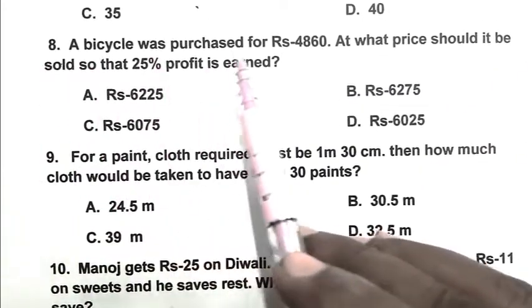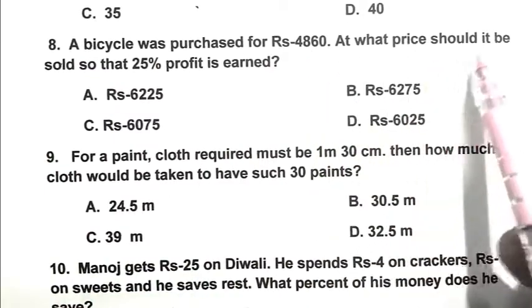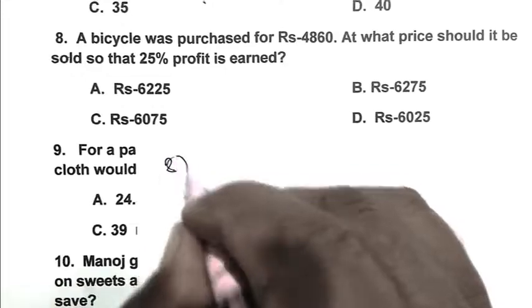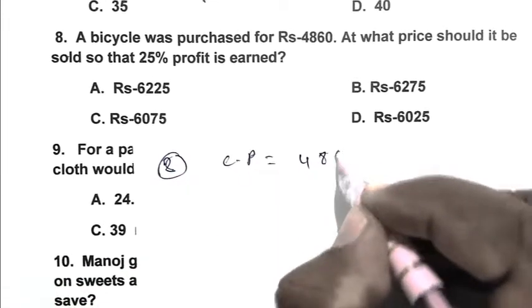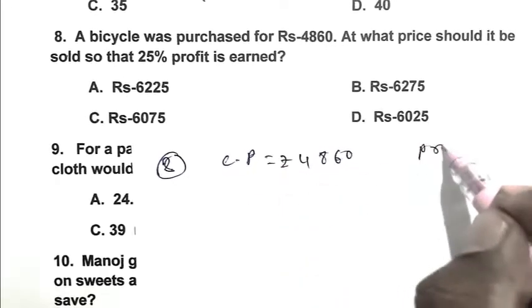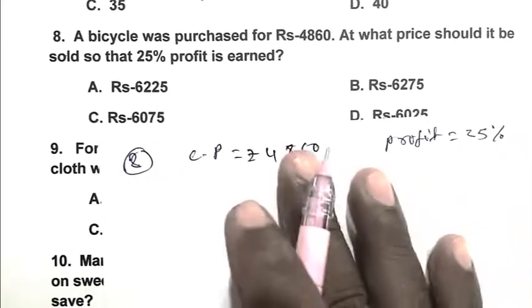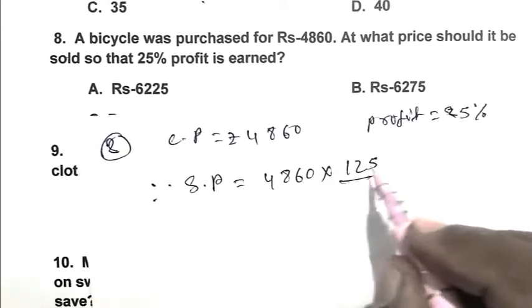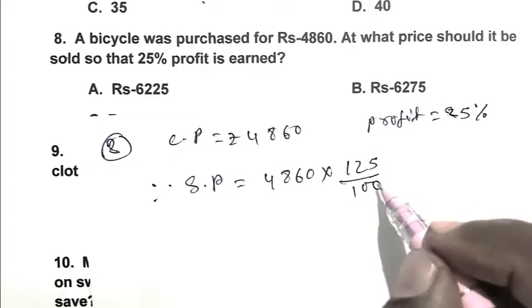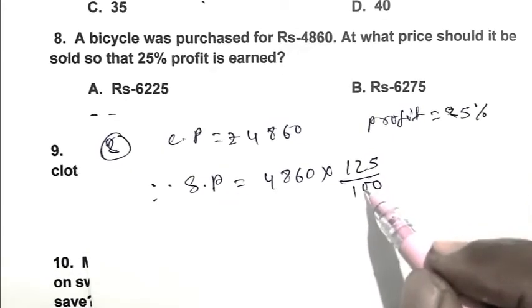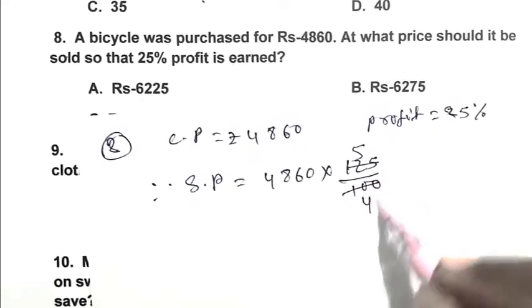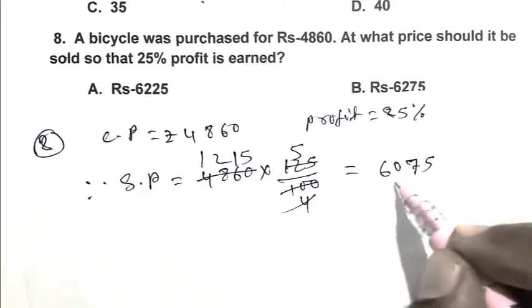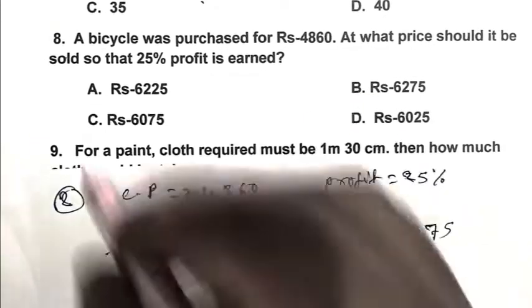Question number 8. A bicycle was purchased for Rs. 4860. At what price should it be sold so that 25% profit is earned? The cost price is Rs. 4860 and the profit is 25%, so the selling price is 4860 multiplied by 125 upon 100, which equals Rs. 6075. So C is the right answer.